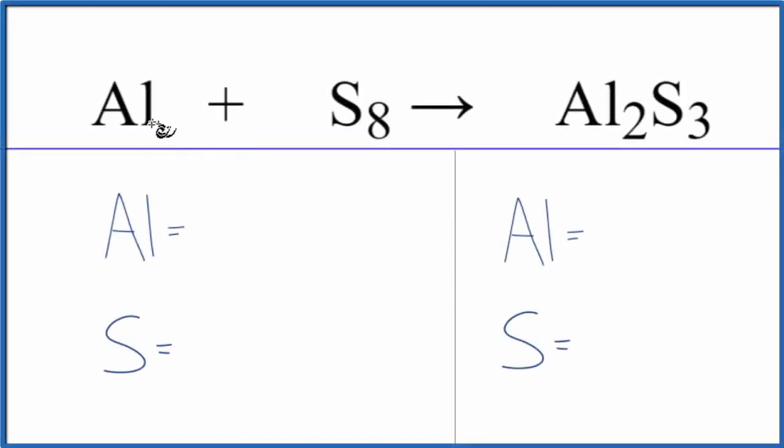In this video, we'll balance the equation for Al plus S8 yields Al2S3. Sometimes you'll see just Al plus S, but we have this octosulfur here. It's a good one to know how to balance. Teachers often ask this question.